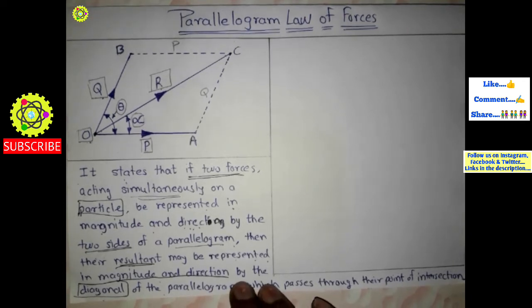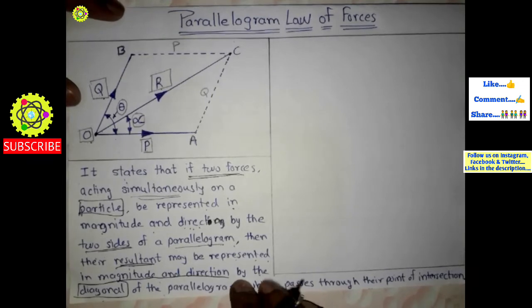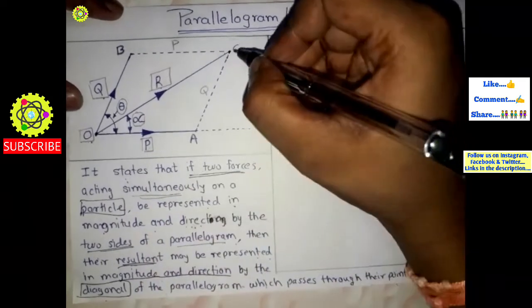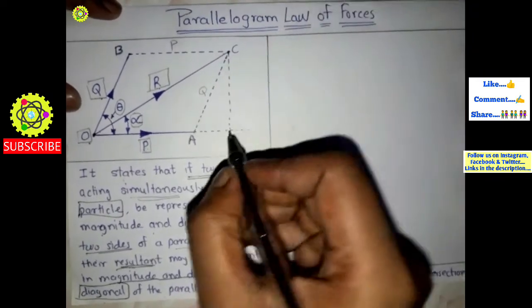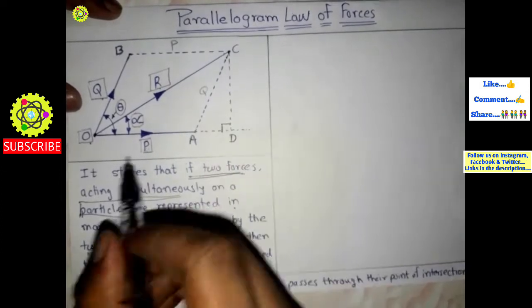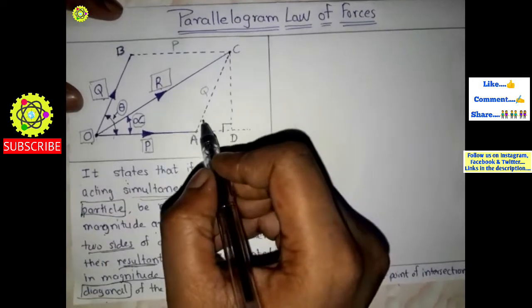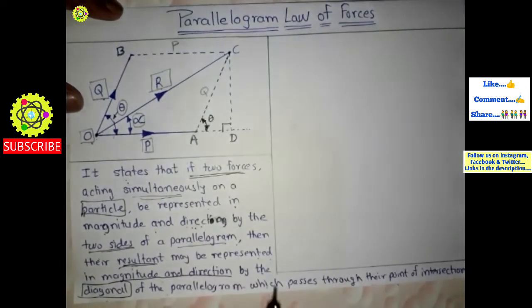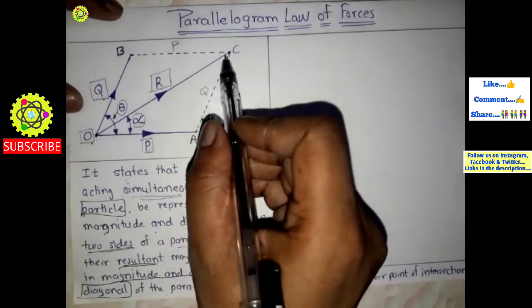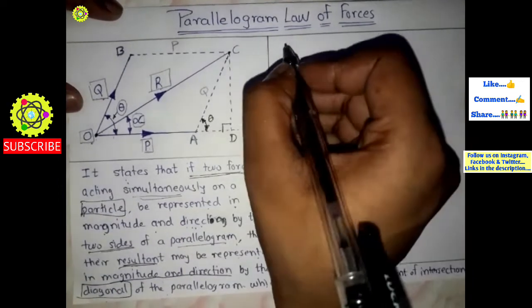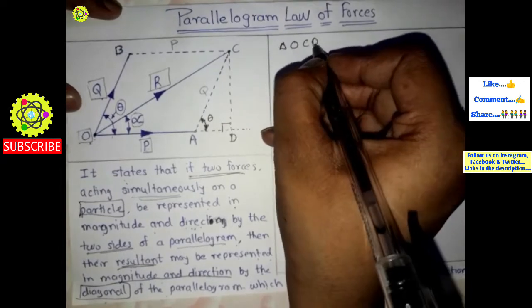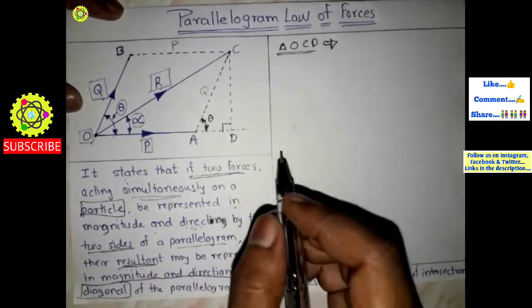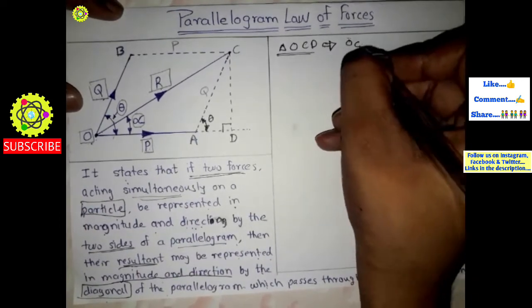Now we will see how to calculate the resultant force and the angle alpha between R and P. We extend this line and draw a perpendicular, giving it the name D, so that it is at 90 degrees. Since this is a parallelogram, the angle at this position is also theta. To calculate the resultant, we consider triangle OCD and apply the Pythagoras theorem.